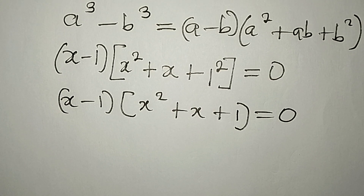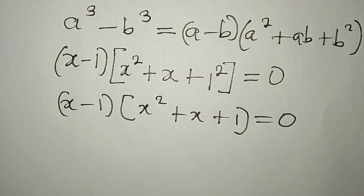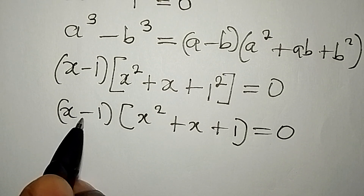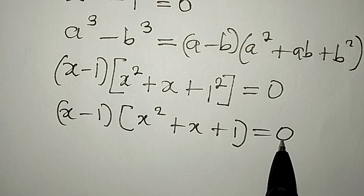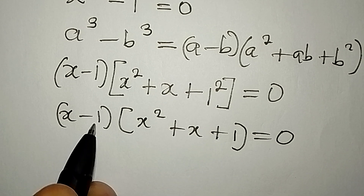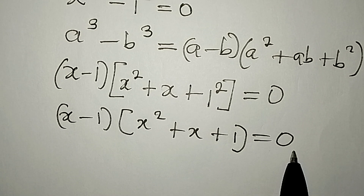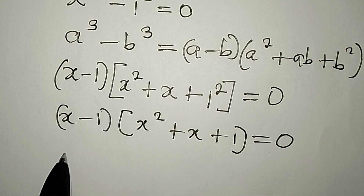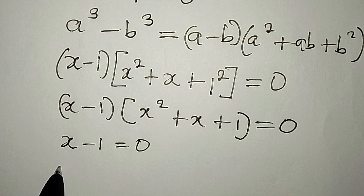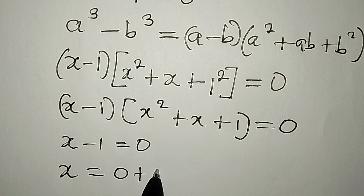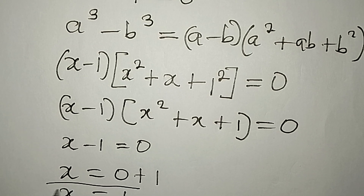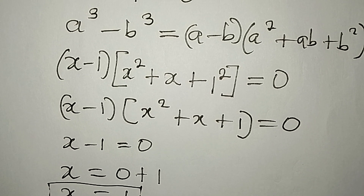From here we apply the zero product rule, equating both factors to zero. Setting x - 1 = 0 gives x = 1. This is the first value of x, and it is a real solution.